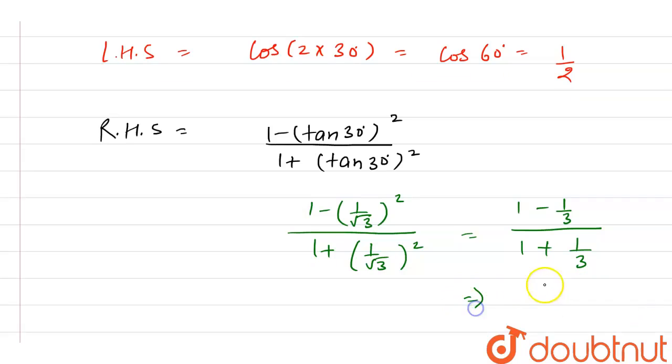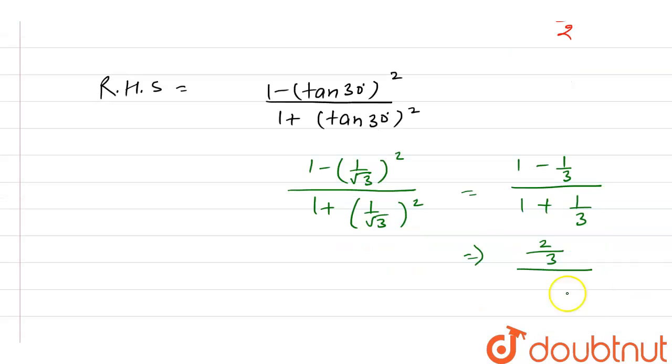If we solve this, the LCM is 3. So 3 minus 1 is 2/3, and in the denominator it's 3 plus 1, that's 4/3.